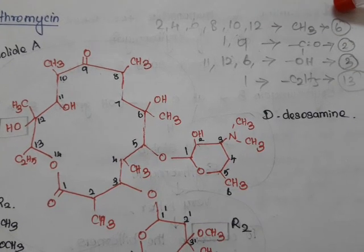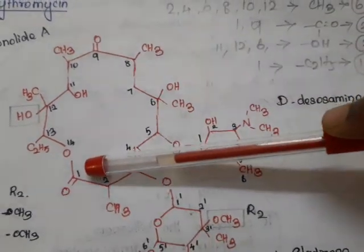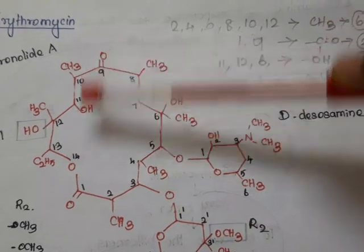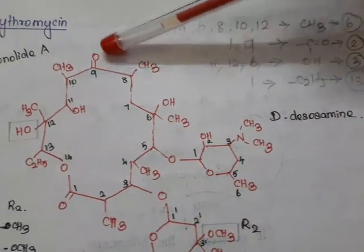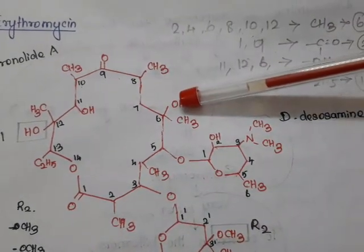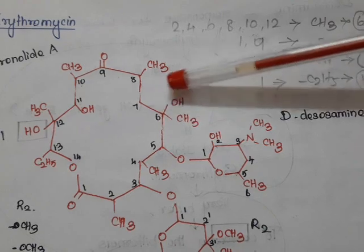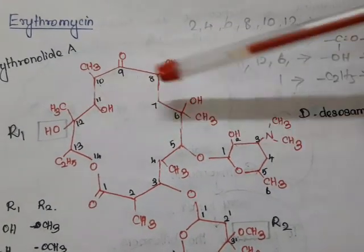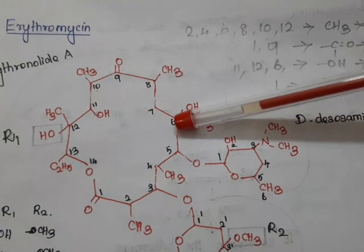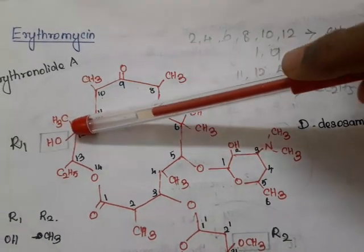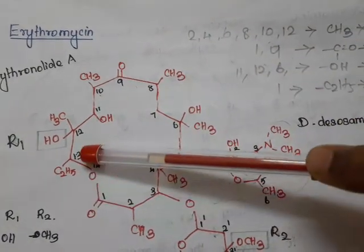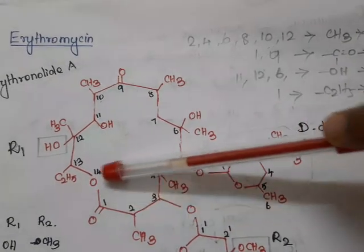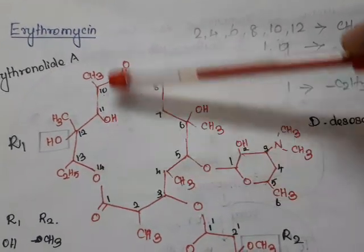It has ketone groups at the 1st and 9th positions — so 2 ketones at 1st and 9th. It has 3 hydroxy groups at positions 6, 11, and 12. There is only 1 ethyl group at the 13th position, and the lactone oxygen is present at the 14th position.